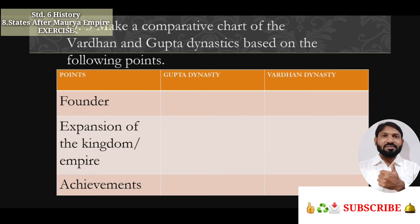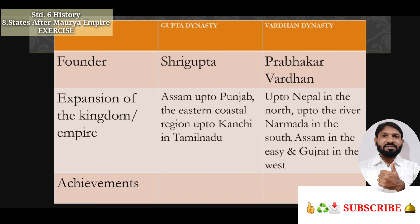Question five: Make a comparative chart of the Vardhana and Gupta dynasties based on the following points — founder, expansion of the kingdom or empire, and achievements. The founder of the Gupta dynasty was Sri Gupta; the founder of the Vardhana dynasty was Prabhakar Vardhan. For expansion: the Gupta dynasty extended from Assam up to Punjab, the eastern coastal region up to Kanchi and Tamil Nadu. The Vardhana dynasty extended up to Nepal in the north, up to the river Narmada in the south, Assam in the east, and Gujarat in the west.